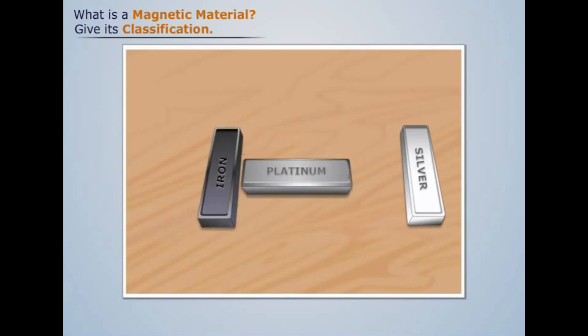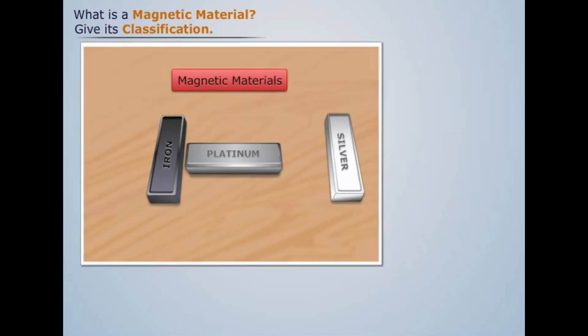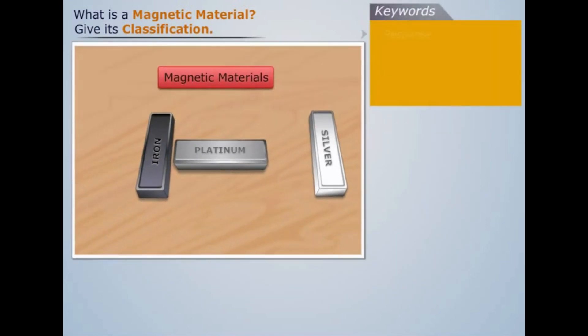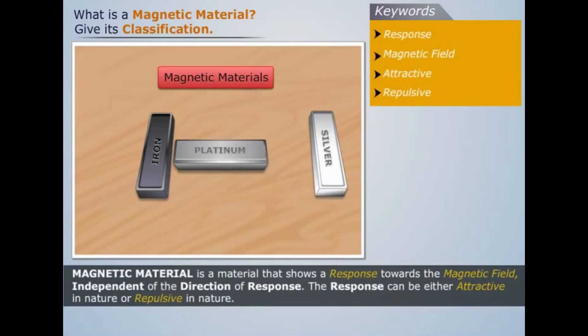Such materials which show a response towards the magnetic field are termed as magnetic materials. Thus we can say that a magnetic material is a material that shows a response towards the magnetic field, independent of the direction of response.